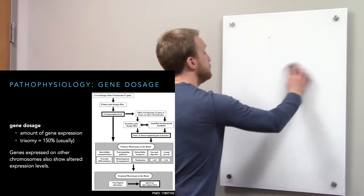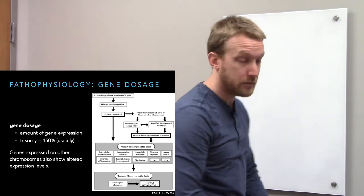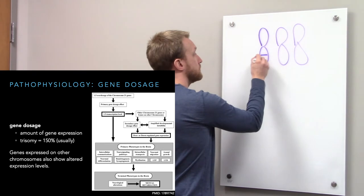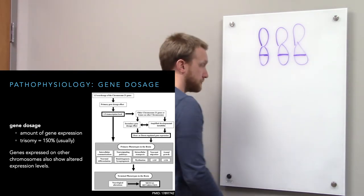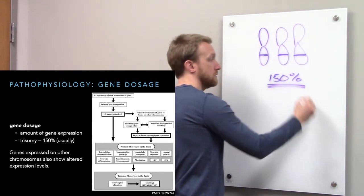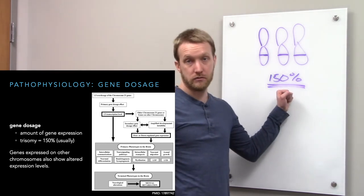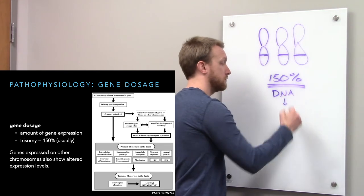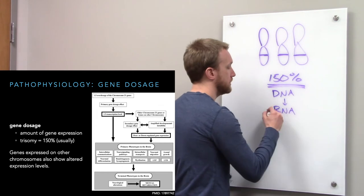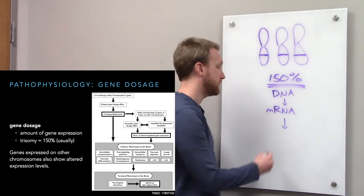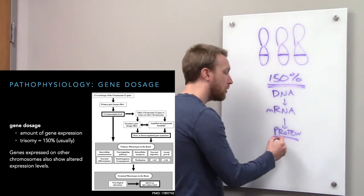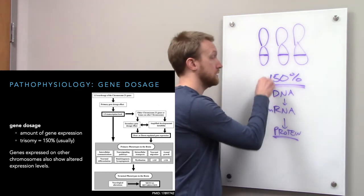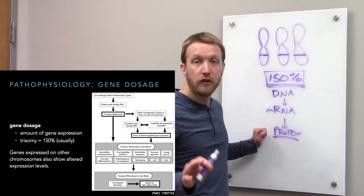What happens in the case of trisomy 21? Rather than having two copies of chromosome 21 genes, we have three copies. As a result, we now have 150% of the genetic material that is typical. If we have 150% of the DNA, that's likely to transcribe to 150% of the messenger RNA and thus 150% of the protein. We're going to make a whole lot more of the proteins on chromosome 21. If we don't have the right gene dosage, we're not going to make the right amount of proteins. And if we don't do that, function will not be optimal.